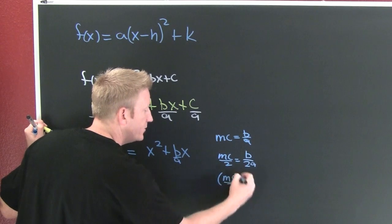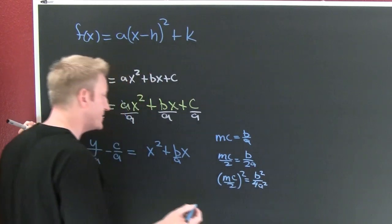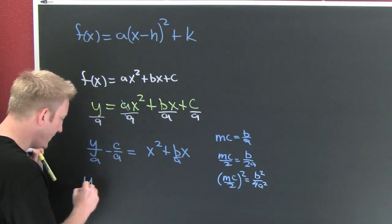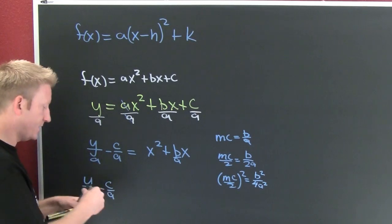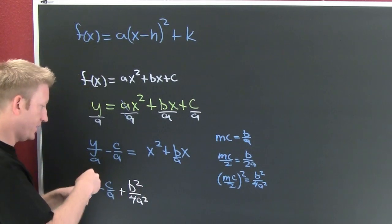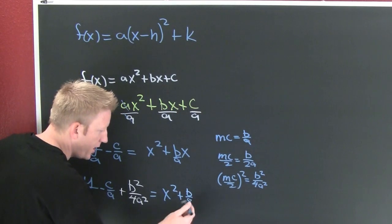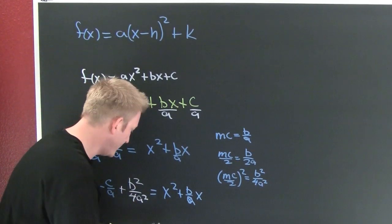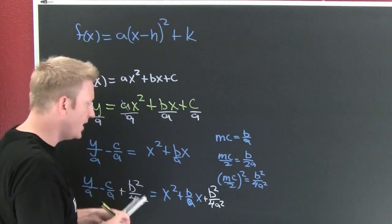And then my middle coefficient over two squared, that's b squared over 4a squared, and that's the value that I'm going to add to both sides. Here we go: y over a minus c over a plus what you do on one side you must also do to the other, b squared over 4a squared. And on the right you got x squared plus b over a x, and then I'm also adding that b squared over 4a squared to both sides.